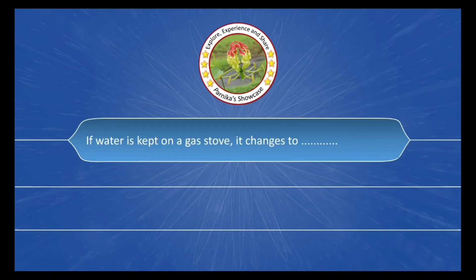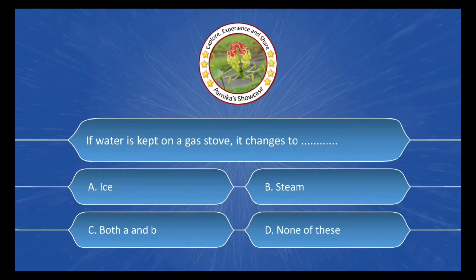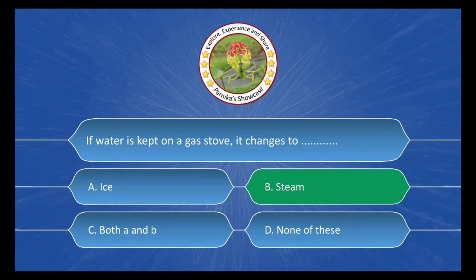Next question: If water is kept on a gas stove, it changes to dash dash. And the options are: A. Ice, B. Steam, C. Both A and B, D. None of these. And the correct answer is Option B. Steam.